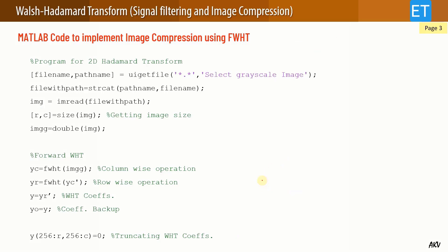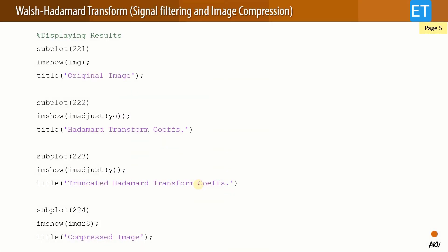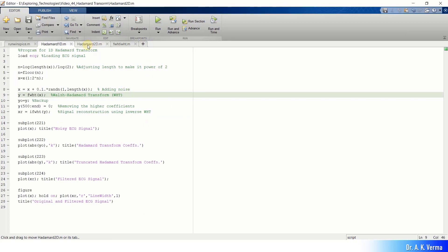For a 512×512 image, the coefficient matrix is also 512×512. The bottom-right quadrant — coefficients from indices 256 to 512 in both dimensions — is zeroed out. With the remaining coefficients, the inverse transform is taken row-wise and column-wise, and the compressed image is written to disk. PSNR between the original and compressed image is computed to assess quality. The display shows the original image, Hadamard coefficients, truncated coefficients, and the final compressed image.